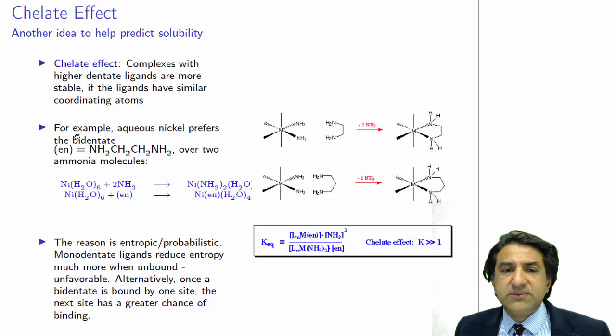For example, let's look at nickel here, aqueous nickel prefers the bidentate ethylenediamine, NH2CH2CH2NH2. So there's ethylenediamine.